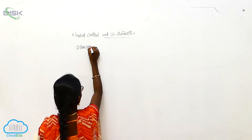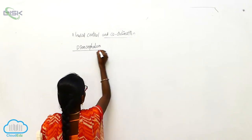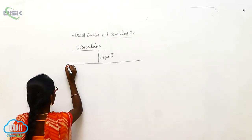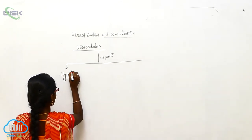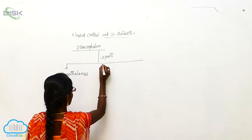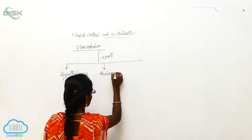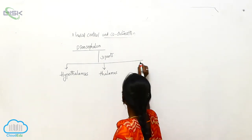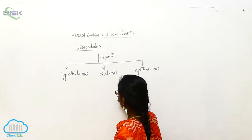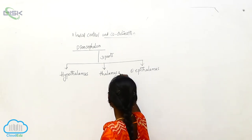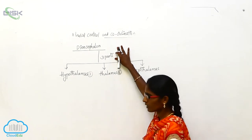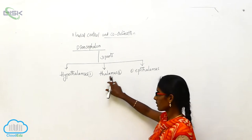The diencephalon divides into three parts: the epithalamus, thalamus, and hypothalamus.